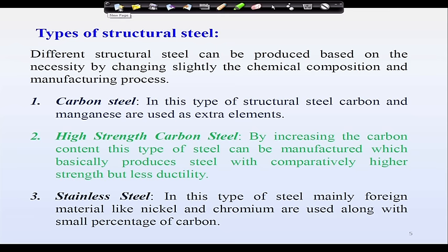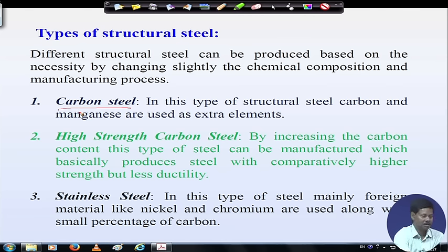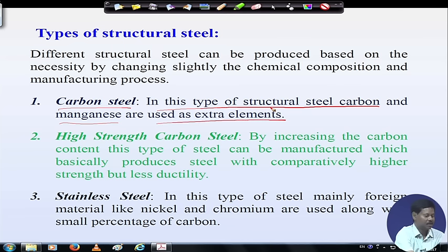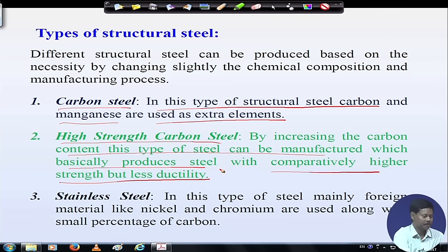Coming to types of structural steel: different steels have been produced based on necessity by changing chemical composition and manufacturing process. In carbon steel, carbon and manganese are used as the extra elements. Another type is high strength carbon steel — by increasing the carbon content, this steel can be manufactured, producing comparatively higher strength but less ductility.